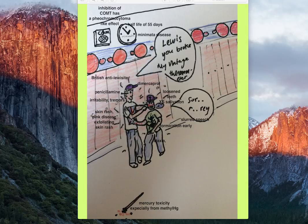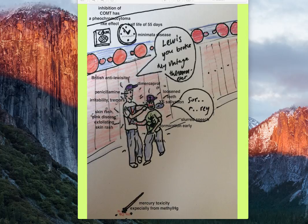The British student manhandling Lewis and causing abnormal movements represents ataxia. The clock on the wall is set to 55 minutes after the hour to represent the half-life of mercury in the body, which is about 55 days — roughly two months. So if you inadvertently ingest mercury, after two months half of that mercury is out of your body; it doesn't permanently stay.